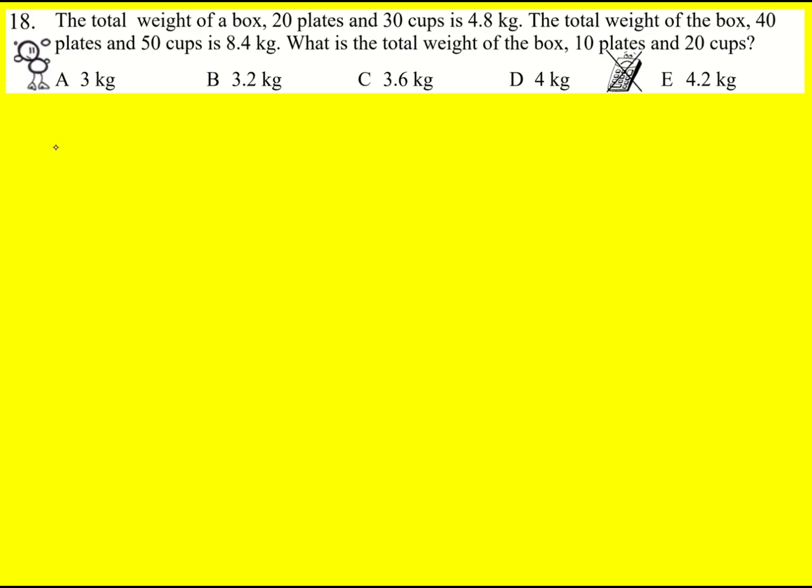I'm going to call the weight of the box B, the weight of a plate P. So it's going to be B plus 20P for the weight of a box and 20 plates. And the weight of a cup can be C, so it's B plus 20P plus 30C is going to be 4.8. And I've created an equation.